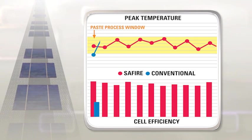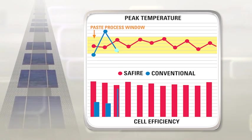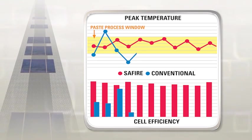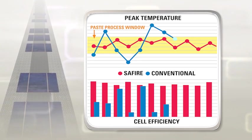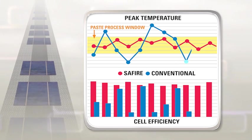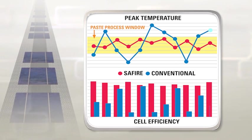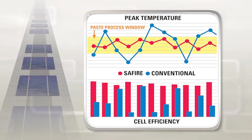Conventional firing furnaces are highly thermally reactive and thermal profiles vary widely depending on uniformity of wafer flow. Varying peak temperatures cause some cells to be fired outside of the capability range of the paste, resulting in a reduction in cell efficiency and yield.